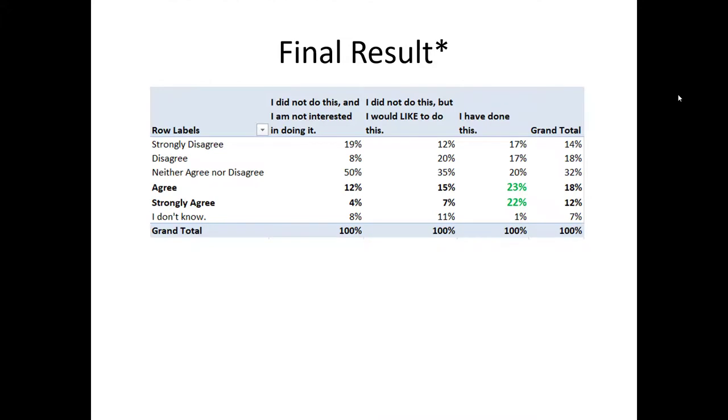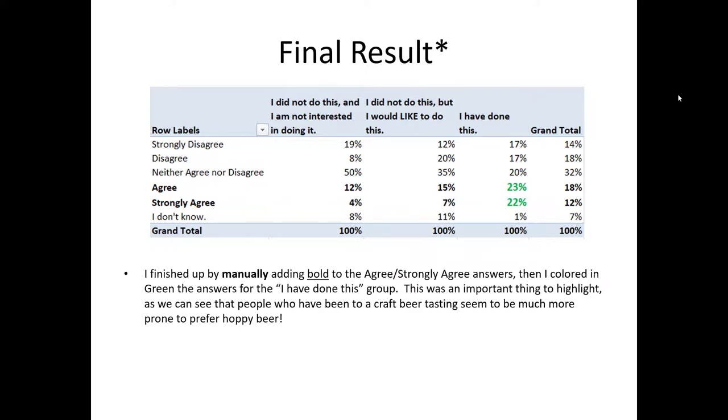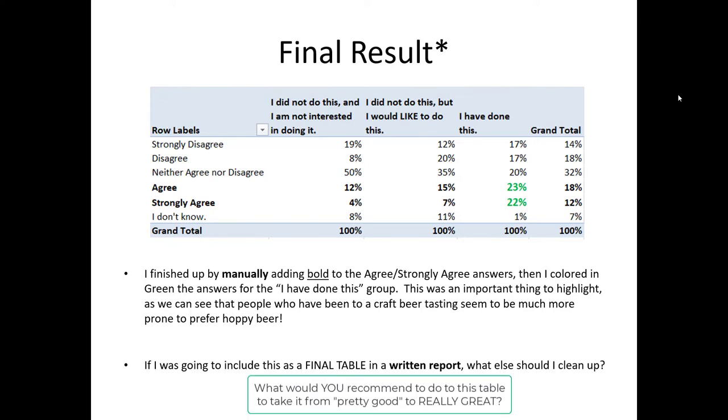Now as a final step, I might clean up this table a little bit more and do some manual adjusting. Notice that I bolded the agree and strongly agree sections and I highlighted the I have done this group in green because that's really the core crux of my question. I'm trying to draw my viewer into the fundamental question I was trying to investigate, right? Help them out a little bit. Now if I was going to include this final table in a written report, are there any other additional modifications or edits you would do to sort of clean this up and have it ready to go?